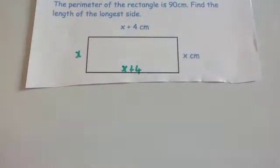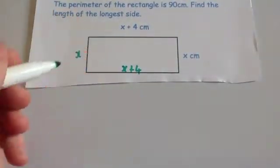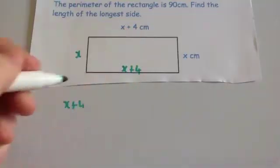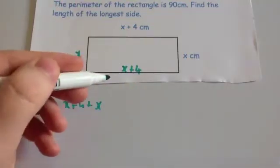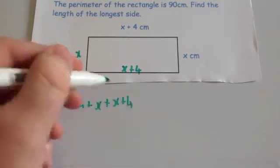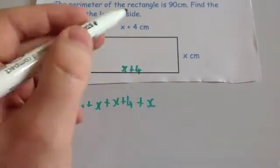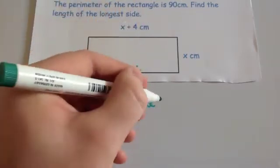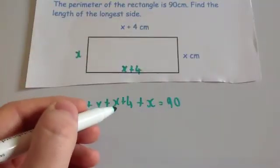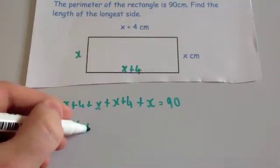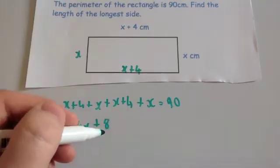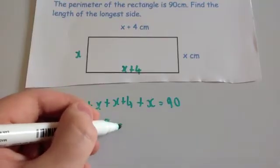That forms an equation we can solve. So x plus 4, plus x, plus x plus 4, plus x equals 90. Collecting like terms: x plus x plus x plus x is 4x, and 4 plus 4 is 8. So 4x plus 8 equals 90.